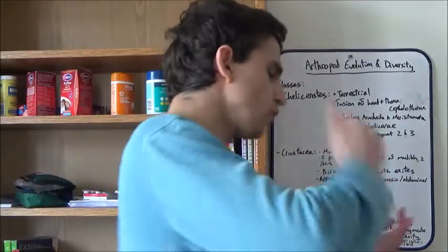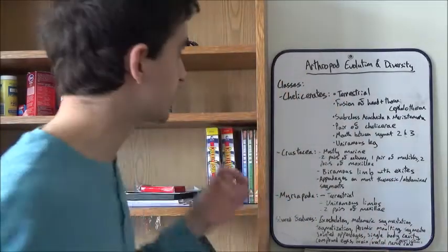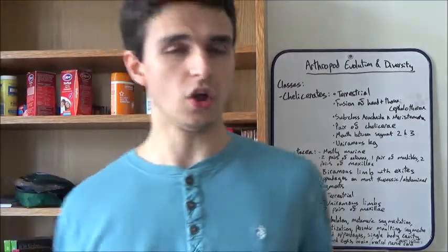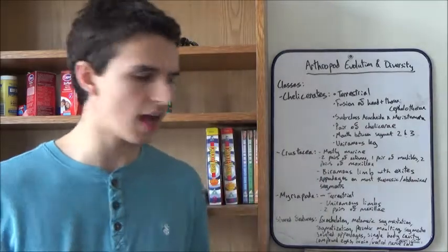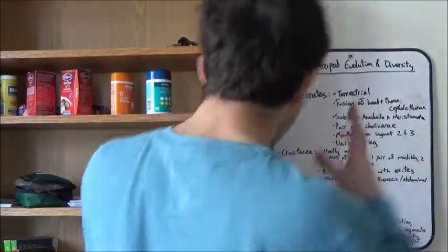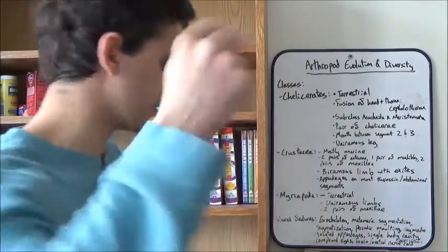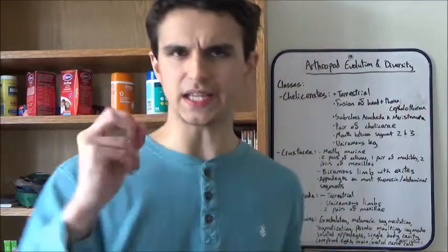Before we talk about insect evolution, we need to talk about where the insects themselves came from. We know that insects are in the phylum Arthropoda, by far the biggest group of animals on the planet. There's quite a few non-insect arthropods, so let's go through the three major groups and talk about their key features.